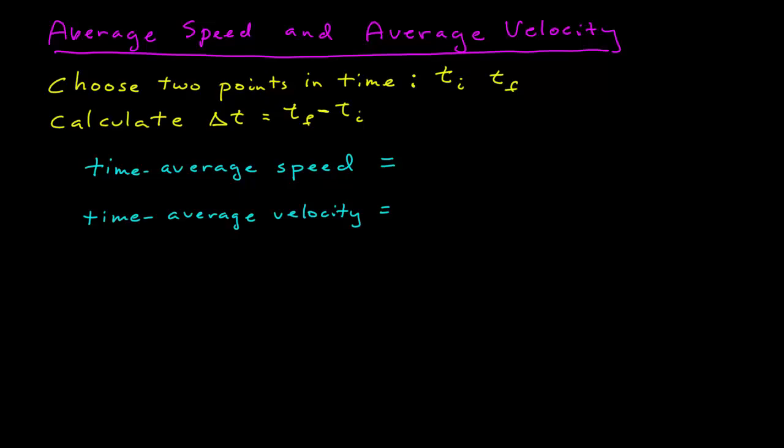The key to understanding the differences between average speed and average velocity is to never, ever use your intuition. If you use your intuition and guess what you think they are, you will always get them wrong. I'm going to give you the definitions of these two terms, and from here on out you will always use these definitions to calculate these terms exactly and nothing else.